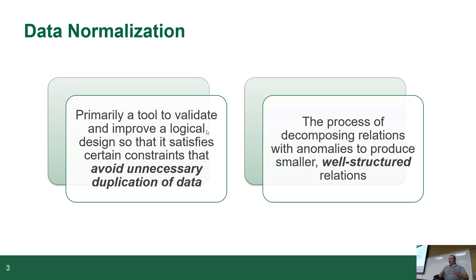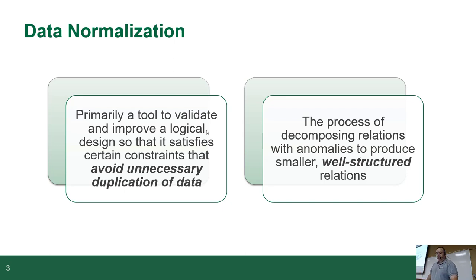Essentially, as part of the normalization process, we're going to take relations — also known as entities — and break them down into their smallest component pieces, so that everything is nicely structured and there's no redundant data.